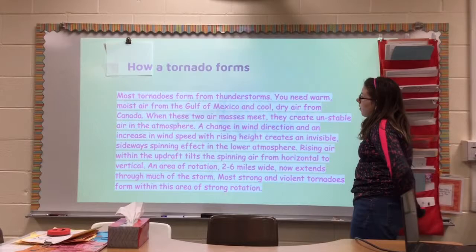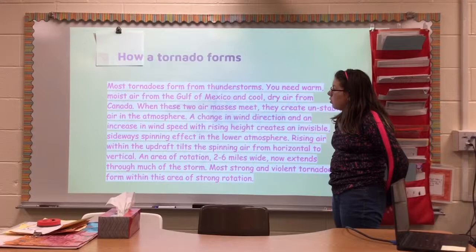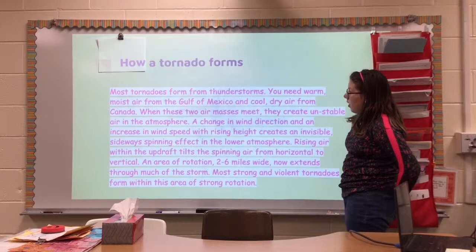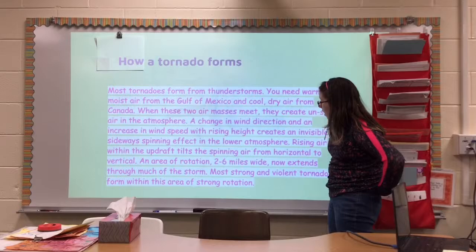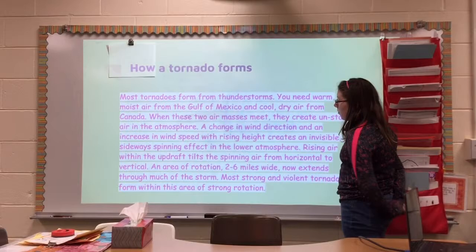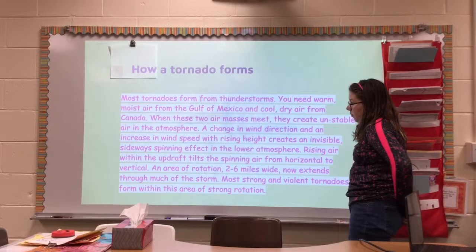Most tornadoes form from thunderstorms. You need warm, moist air from the Gulf of Mexico and cool, dry air from Canada. When these two air masses meet, they create unstable air in the atmosphere. A change in wind direction and wind speed with height creates an invisible sideways spinning effect in the lower atmosphere, and the rising air within the updraft tilts it.